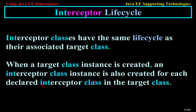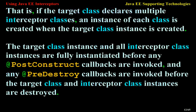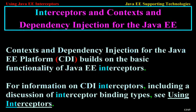Interceptor life cycle: interceptor classes have the same life cycle as their associated target class. When a target class instance is created, an interceptor class instance is also created for each declared interceptor class in the target class. If the target class declares multiple interceptor classes, an instance of each class is created when the target class instance is created. The target class instance and all interceptor class instances are fully instantiated before any post-construct callbacks are invoked, and any pre-destroy callbacks are invoked before the target class and interceptor class instances are destroyed.